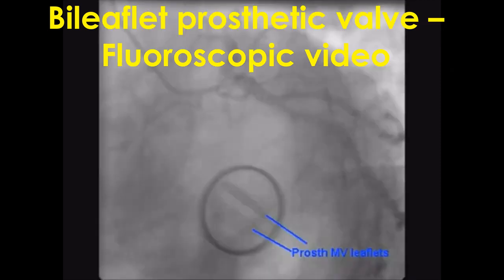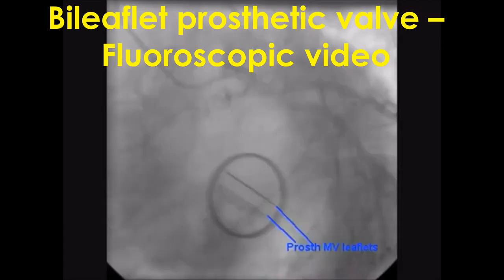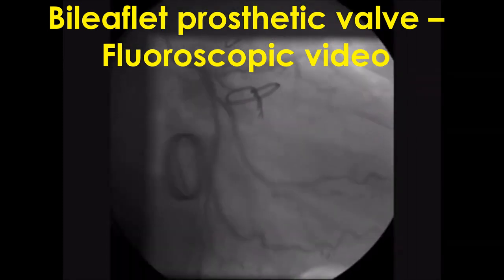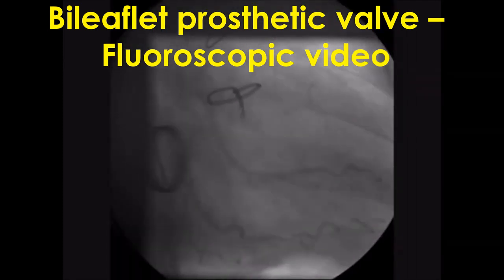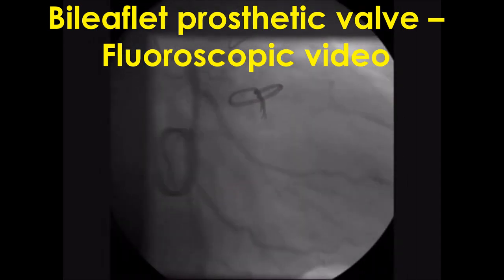Two leaflets are seen in this view, with the background showing a coronary angiogram. A Tiger catheter is seen in the left coronary ostium. This is another view — the RAO caudal view; the earlier one was the LAO caudal view. Here the valve ring is seen in a different plane, and the coronary angiogram is also visible in the background.